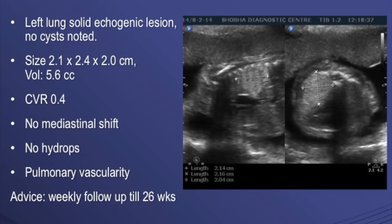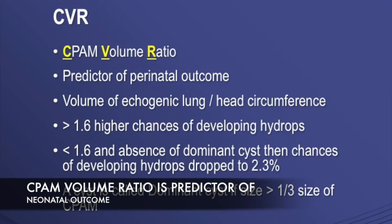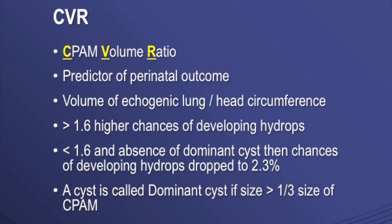The advice will be weekly follow-up until 26 weeks. The CPAM volume ratio is a predictor of perinatal outcome — it is the volume of echogenic lung to head circumference ratio. If it is more than 1.6, there are higher chances of developing hydrops. If it is less than 1.6 and there is no dominant cyst, the chances of developing hydrops drop significantly to around 2.3%. A dominant cyst is defined as a cyst whose size is more than 1.3 times the size of the entire lesion.